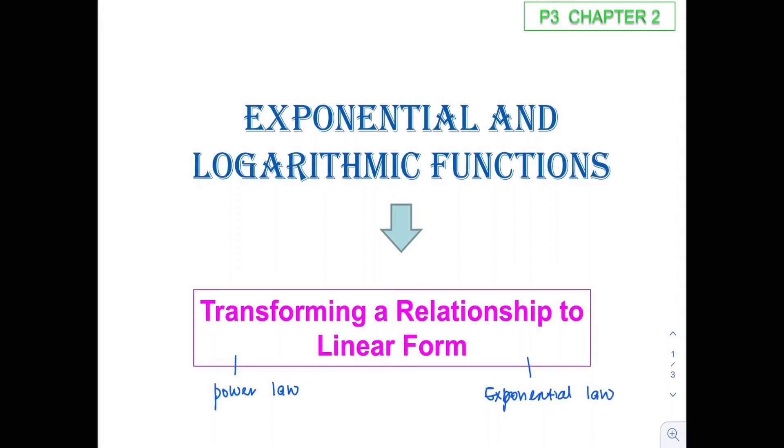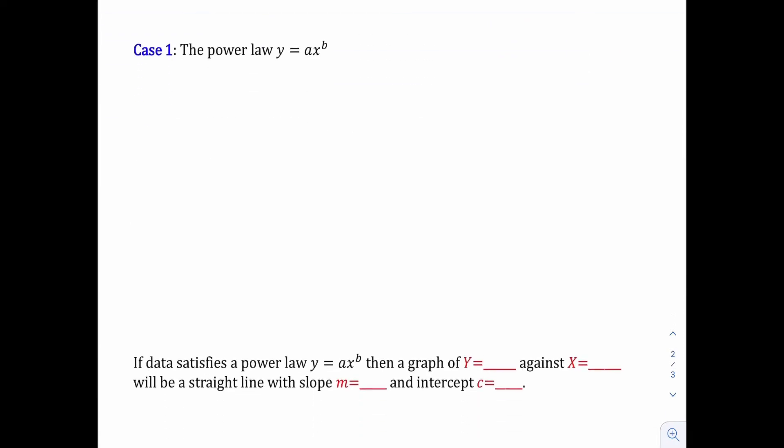For now, let's have a look at the first type, the Power Law. How are we supposed to transform this relationship into a linear form? The method is very simple - you just need to either log both sides or ln both sides. It depends on the question or on you. For me, I'll just ln both sides. After we have ln both sides, for the right-hand side, you need to separate the a and the x power b. Since a is multiplied with x power b, according to the log's rule, we can actually separate it into two terms.